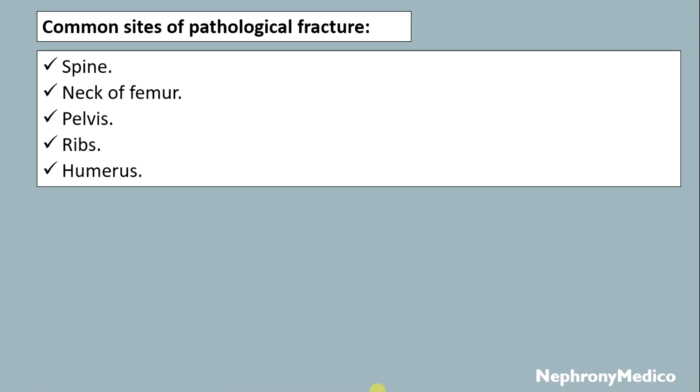The common sites of pathological fracture include the spine, neck of femur, pelvis, ribs, and humerus.